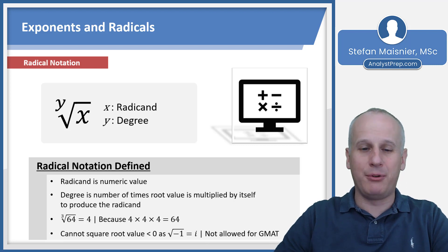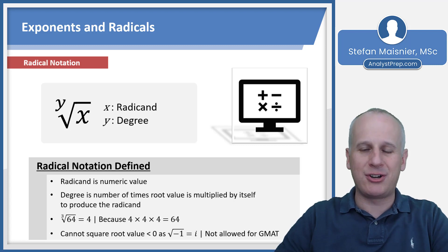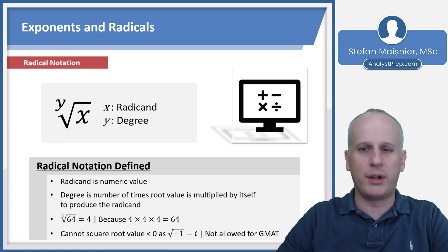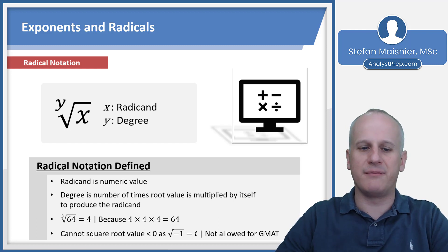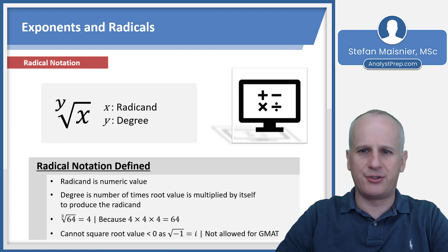You are unable to — at least for the purposes of this exam — square root a negative, because that would produce what is known as an imaginary number. The imaginary number is not allowed for the GMAT. If you try to square root negative 1, there's nothing times itself that can produce a negative, since negative 1 times negative 1 produces positive 1. You cannot square root a negative as far as the GMAT goes.